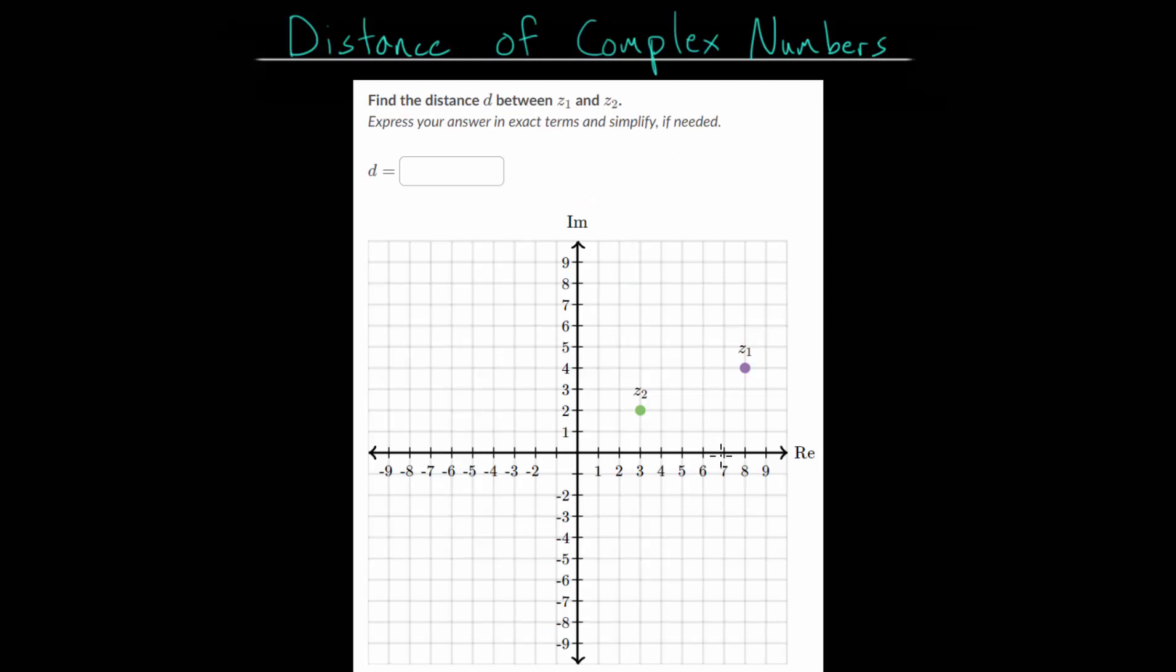Here we have a graph of the complex plane where the vertical axis is the imaginary axis. These numbers are going up in multiples of i, where i is the square root of negative 1, and the horizontal axis is the real axis. These are just the normal numbers 1, 2, 3, and so on. We need to figure out what the distance between these two complex numbers is.